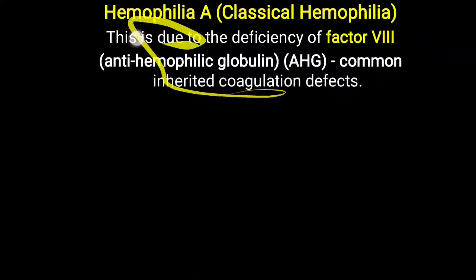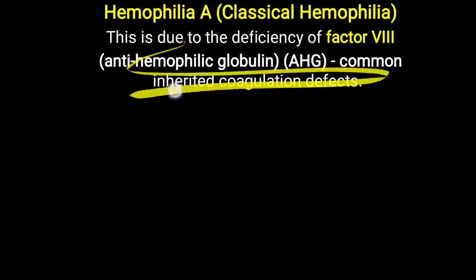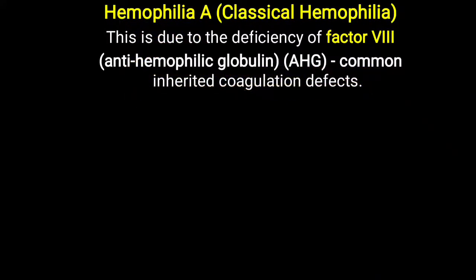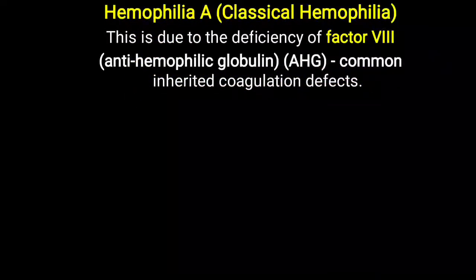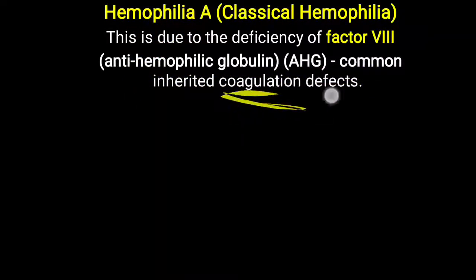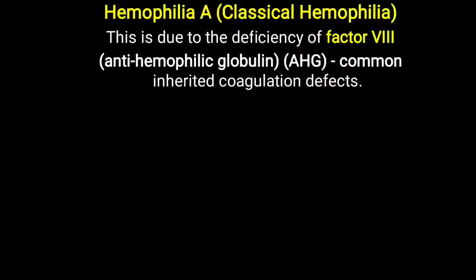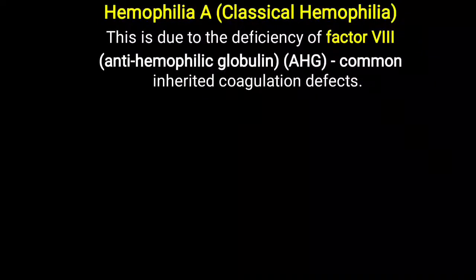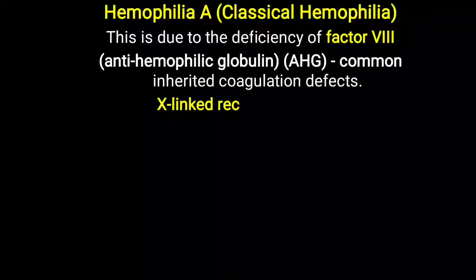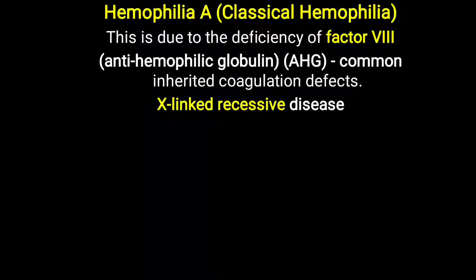Haemophilia A is the most common inherited coagulation defect. There are many coagulation defects such as von Willebrand disease and Haemophilia A, B, and C, but the most common one is Haemophilia A. This condition is X-linked recessive.